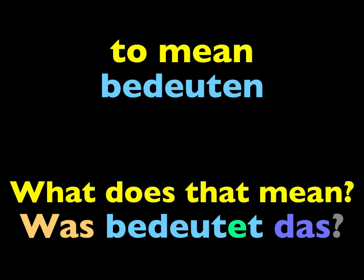Let's continue. Repeat this new word, the verb 'to mean': bedeuten. Again, bedeuten. And ask this question, because it's a good question to know: Was bedeutet das? Again, was bedeutet das? This verb will be in our next sentence.